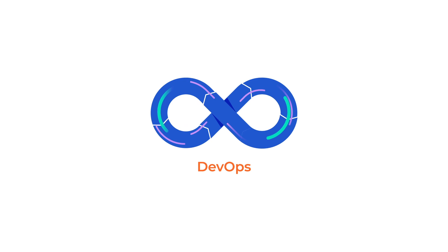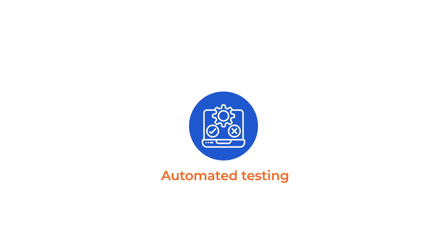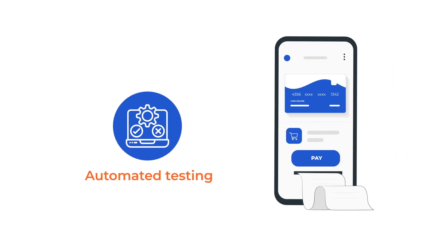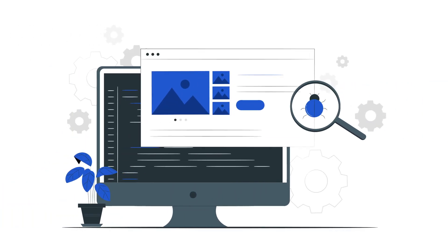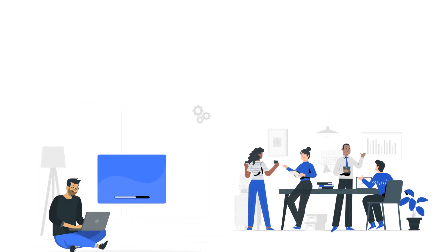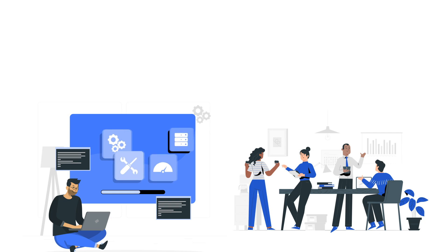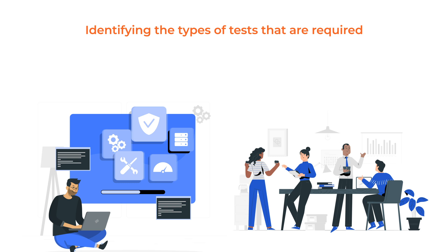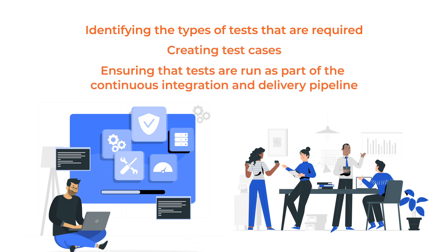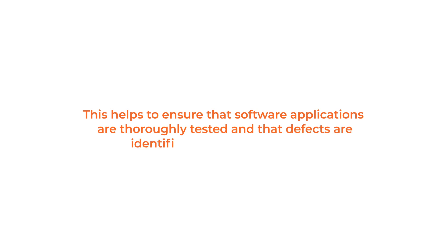DevOps emphasizes the importance of automated testing, which allows tests to be carried out more efficiently and reliably than manual testing. Automated testing involves the use of specialized software tools that can run a suite of tests on the application or system automatically. This makes it possible to detect and fix defects early in the software development process, which can save time and reduce the cost of fixing defects later in the development cycle. DevOps practitioners also work closely with software testers to ensure that tests are integrated into the development process, identifying the types of tests required, creating test cases, and ensuring that tests are run as part of the continuous integration and delivery pipeline. This helps ensure that software applications are thoroughly tested and that defects are identified and resolved quickly.